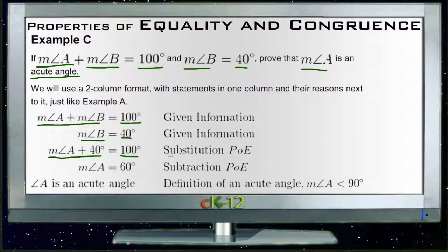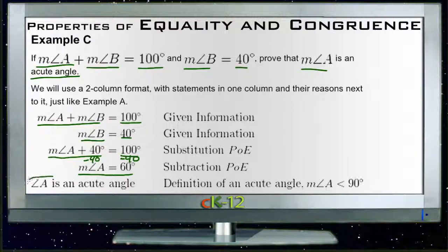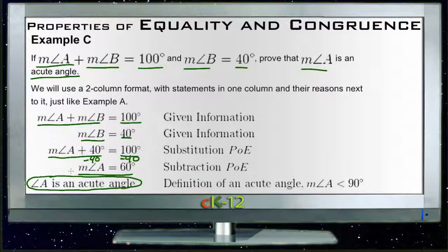And now we can use subtraction, subtract 40 from both sides right here using our subtraction property of equality. And that tells us that A is 60 degrees. And since an acute angle is anything less than 90, A has to be an acute angle if it's 60 degrees. And that's all there is to it.